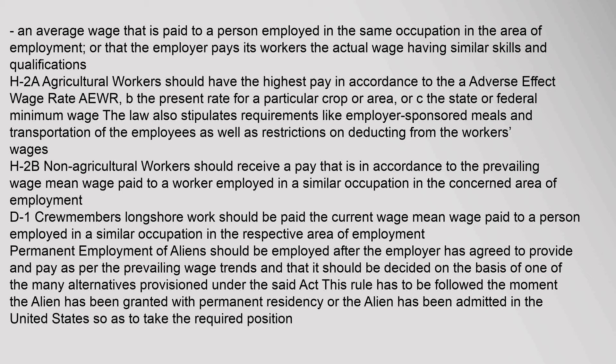H2B Non-Agricultural workers should receive pay in accordance with the prevailing wage — the mean wage paid to a worker employed in a similar occupation in the concerned area of employment. D1 Crewmembers performing longshore work should be paid the current wage, the mean wage paid to a person employed in a similar occupation in the respective area of employment. Permanent employment of aliens should be made after the employer agrees to provide and pay as per prevailing wage trends, decided on the basis of the alternatives provisioned under the act, effective once the alien has been granted permanent residency or admitted to the United States.